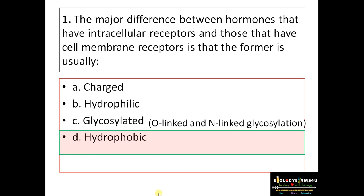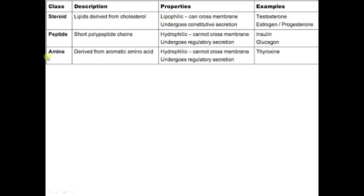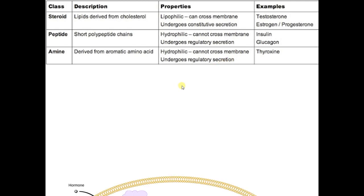There are three classes of hormones. First, steroid hormones — lipids derived from cholesterol, lipophilic, can cross the membrane (phospholipid bilayer); examples include estrogen, testosterone, progesterone. Second, peptide hormones — made of short polypeptide chains or proteins, hydrophilic, cannot cross plasma membrane, so receptors are on the cell membrane; examples include insulin and glucagon. Third, amine hormones — derived from aromatic amino acids like tryptophan and tyrosine, hydrophilic, cannot cross cell membrane; examples include thyroxine and epinephrine.